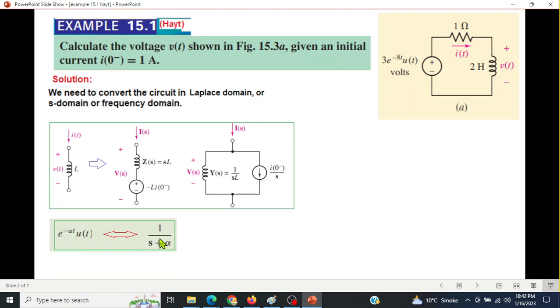We'll use the transform: e^(at) in S domain is 1/(S+A). So 3e^(-8t)u(t) becomes 3/(S+8) by this formula. Then we need to convert SL: SL will be 2S because L is 2, and also LI₀ will be 2×1 = 2. Now we can draw the S domain circuit with these values.